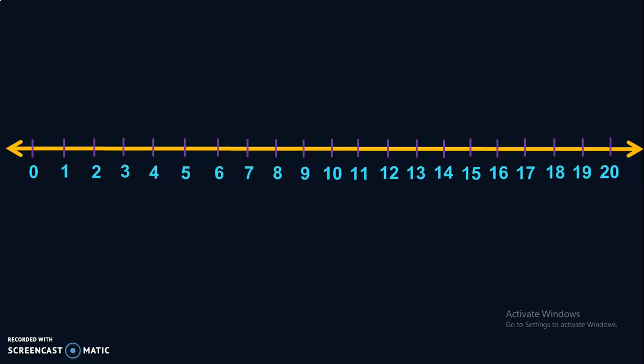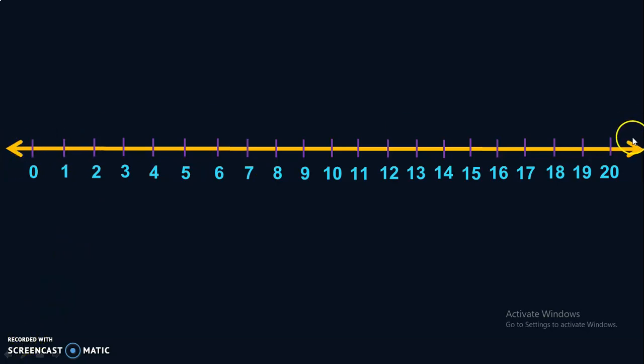This is a number line with numbers 0 to 20. You can see that the numbers are placed at equal intervals. This visual representation helps children understand the concepts of before numbers, after numbers, between numbers, and also do addition and subtraction easily. If you notice, the number line has arrows on both ends, which means you can have numbers before 0 — that is negative numbers — and also numbers after 20.